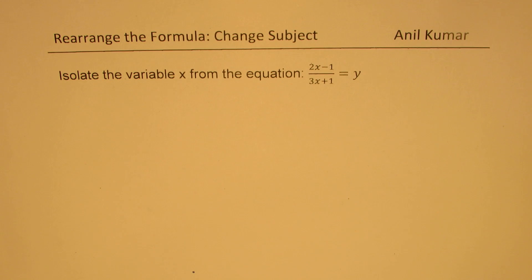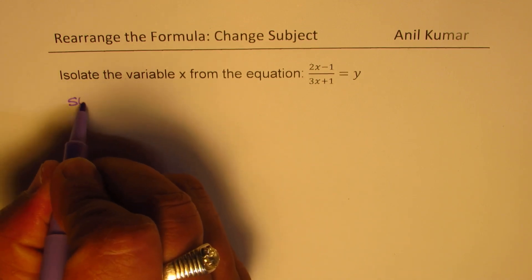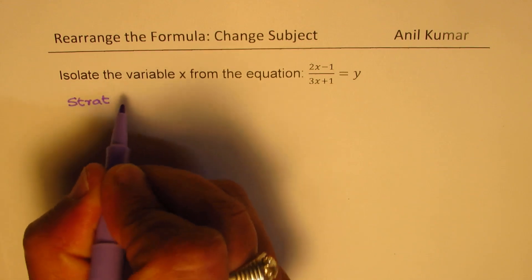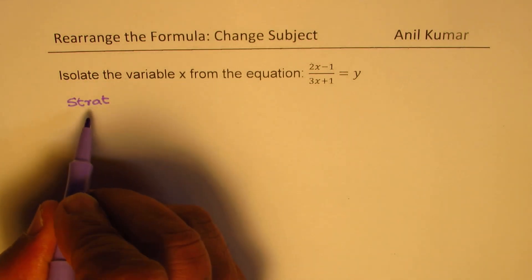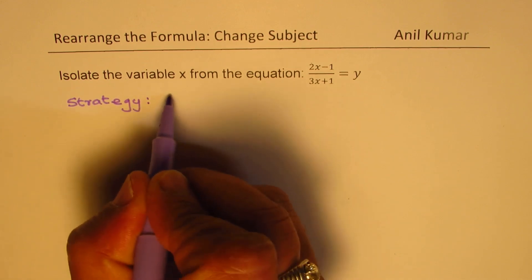Now, if you are given a rational function as shown here, the strategy is to cross multiply. We'll discuss different strategies with the help of examples. In this example, the strategy will be cross multiplication.